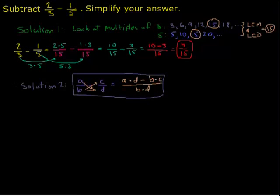So going back to our original fractions, we have 2/3 minus 1/5, equals, and now we do our criss-cross multiplying, 2 times 5, which is our a times d, 2 times 5, minus since we're subtracting, 3 times 1, all over 3 times 5.